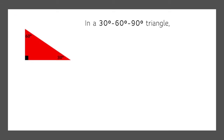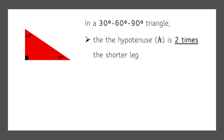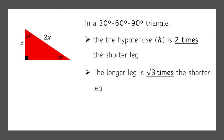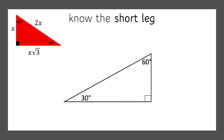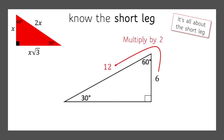Now for the 30-60-90 triangle. In the 30-60-90 triangle, we know that the hypotenuse H is twice the shorter leg, and we know that the longer leg is root 3 times the shorter leg. It's usually easiest to just dive into examples. So what happens if we know the short leg? In 30-60-90s, it's all about the short leg. Let's say it's 6. To find the hypotenuse, we multiply by 2 — 6 times 2 is 12. To find the long leg, we multiply by root 3 — so 6 times root 3.